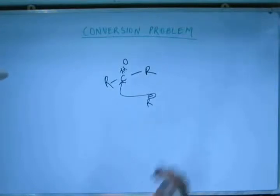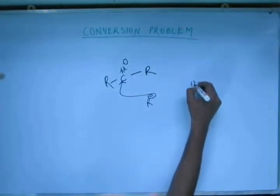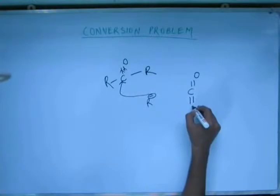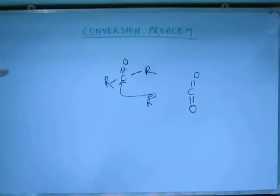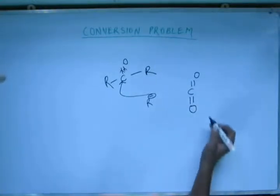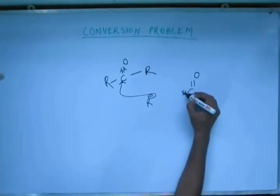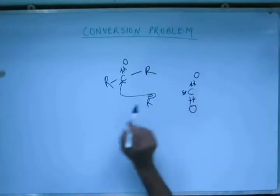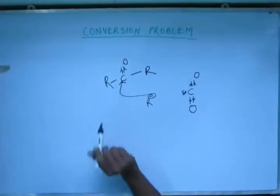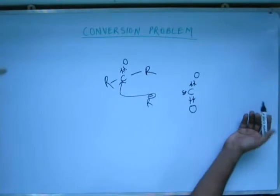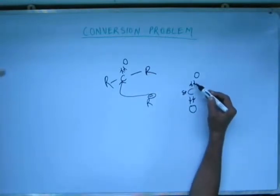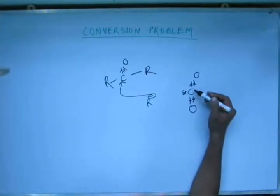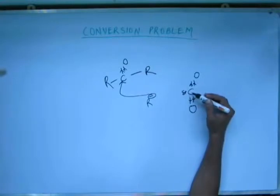Similarly, suppose we have carbon dioxide gas. In carbon dioxide, we have two C=O bonds, and the electron deficiency on the carbon in CO₂ is much greater than what it is in a simple carbonyl group. Because there are two C=O bonds and electrons are pulled by oxygen on both sides of carbon, the deficiency is a cumulative effect and is therefore greater.